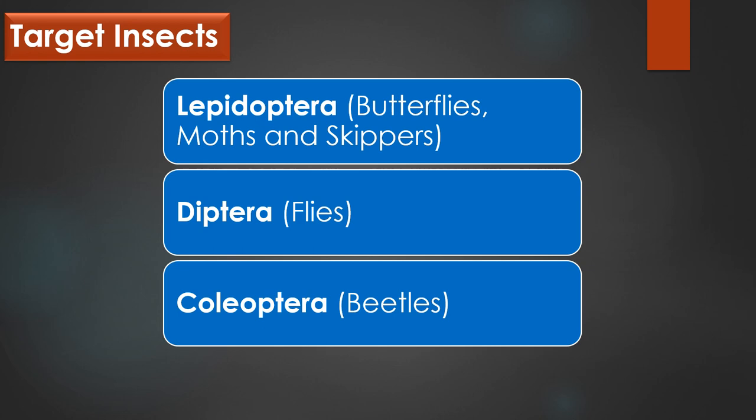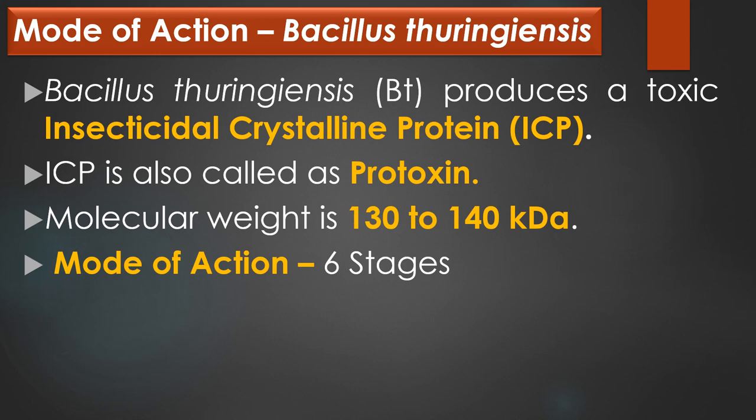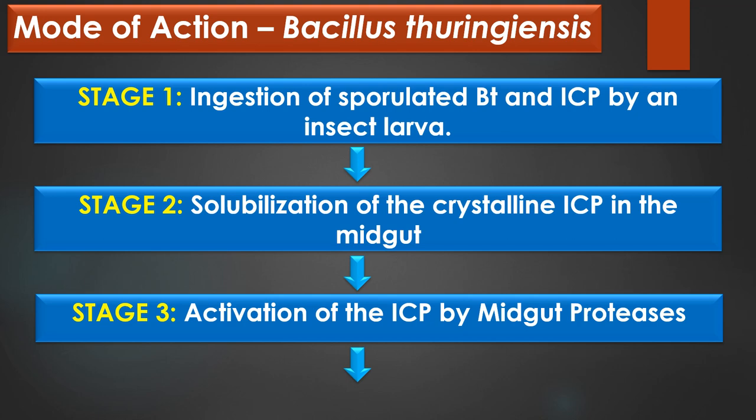Next, mode of action of Bacillus thuringiensis. The bacterium produces a toxic insecticidal crystalline protein, in short form called as ICP. ICP is also called as protoxin and its molecular weight is 130 kDa to 140 kDa. The mode of action of Bacillus thuringiensis involves six stages. In stage 1, ingestion of sporulated Bacillus thuringiensis and insecticidal crystalline protein or ICP by an insect larva.